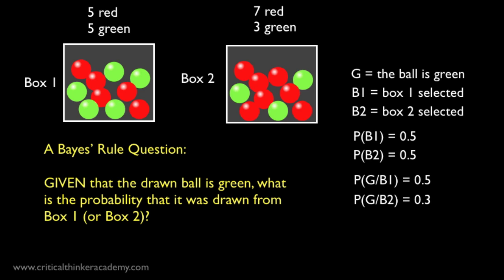The information on the right summarizes what we know about the setup. The probability of picking any given box is 0.5 because it's random. And the probability of picking a green ball out of any particular box is given by the proportion of green balls in the box, which are 0.5 and 0.3 respectively.